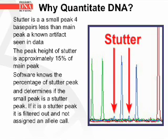From the diagram at the side, you can see where the two stutter peaks — those small peaks in blue — are labeled, and they correspond to their main peaks, which are also in the same blue dye. The peak height of stutter varies, but it is approximately 15% of the main peak. The software knows the percentage of the stutter peak and determines if the small peak is a stutter peak or not. If it is a stutter peak, it is filtered out and not assigned an allele call.